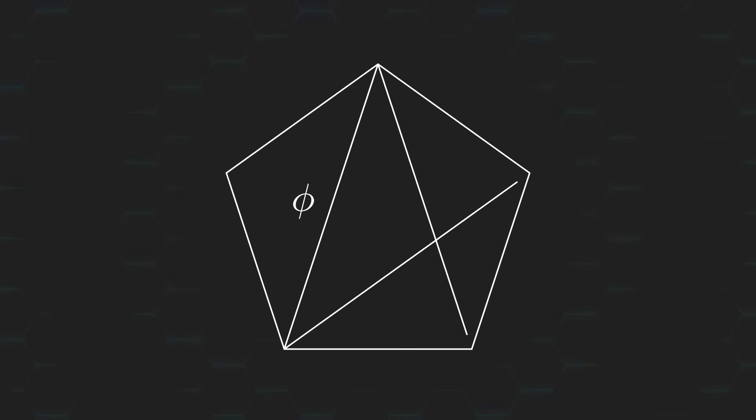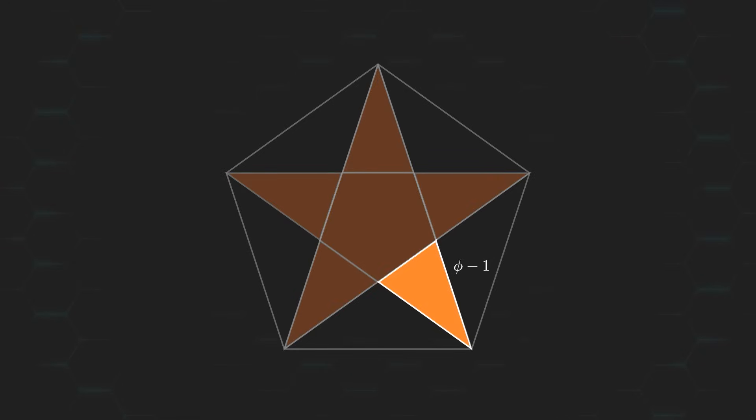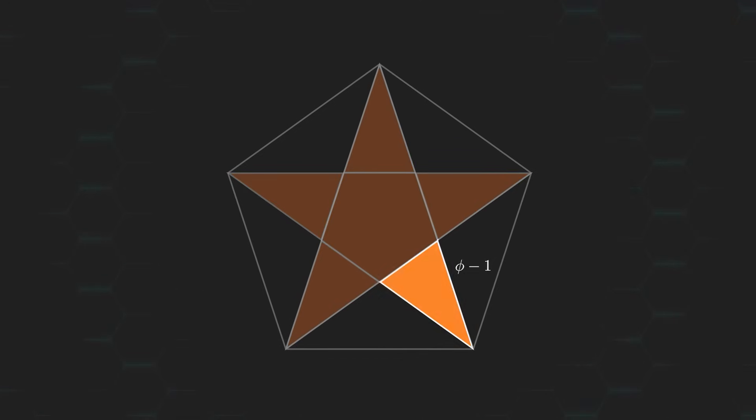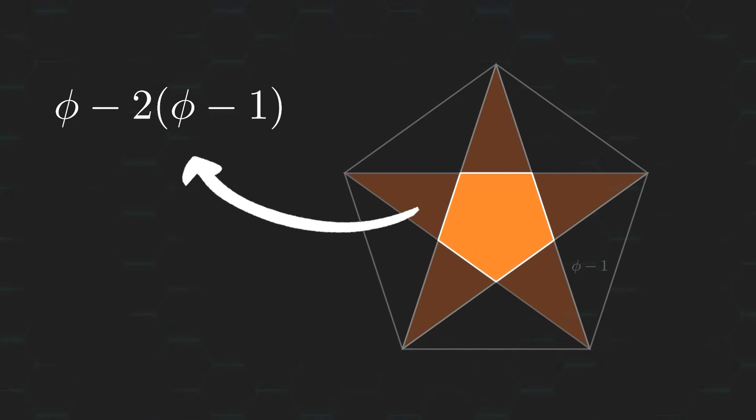Okay, let's get back on track before we get too carried away. We just showed that the length of this line is equal to phi, while the length of the base of this purple triangle is phi-1. Now if we bring back our star, we can see that the legs of these triangles must have a length of phi-1, which means that the smaller pentagon must have a side length of 2 minus phi.